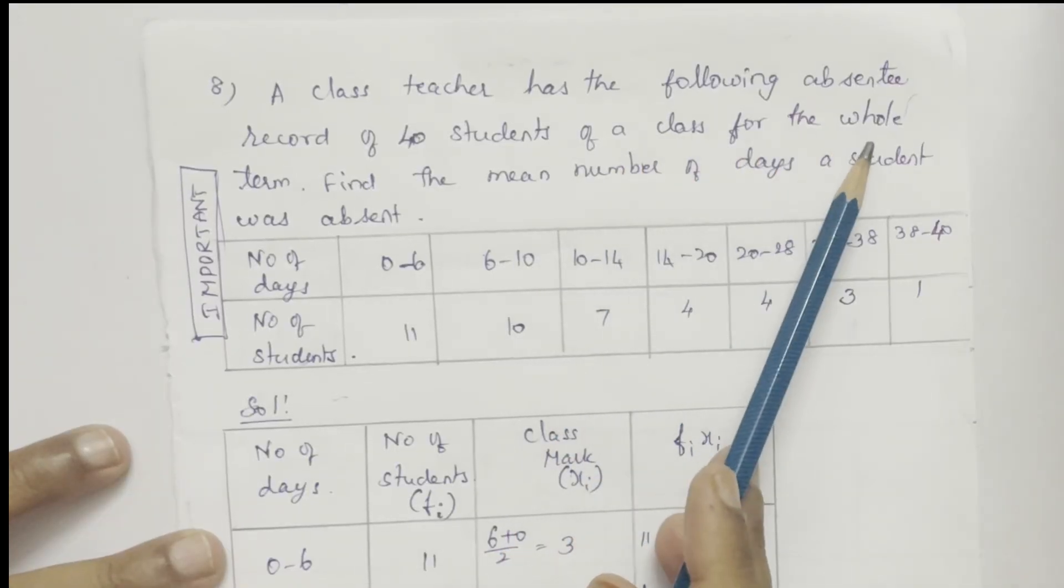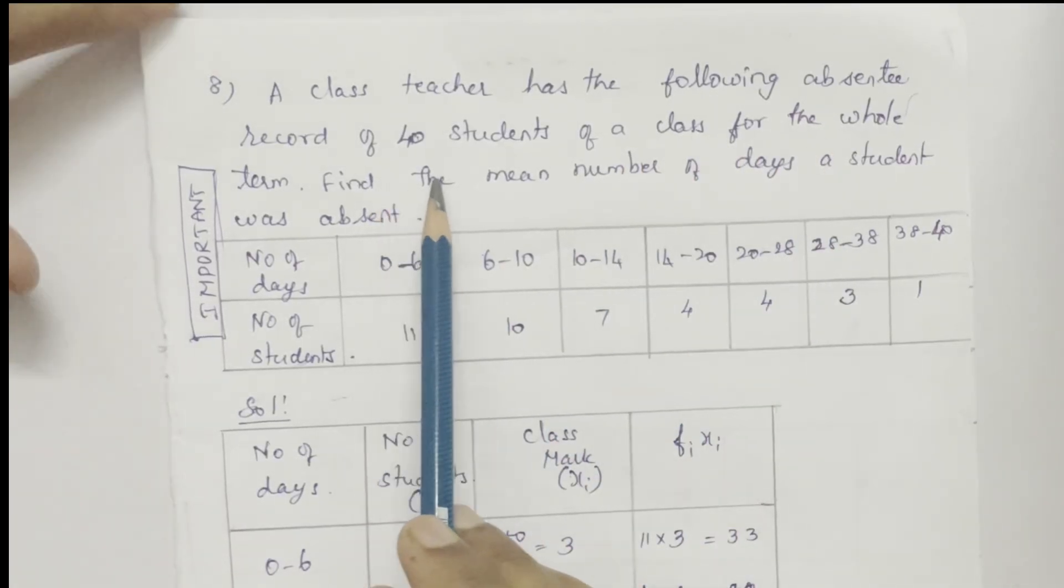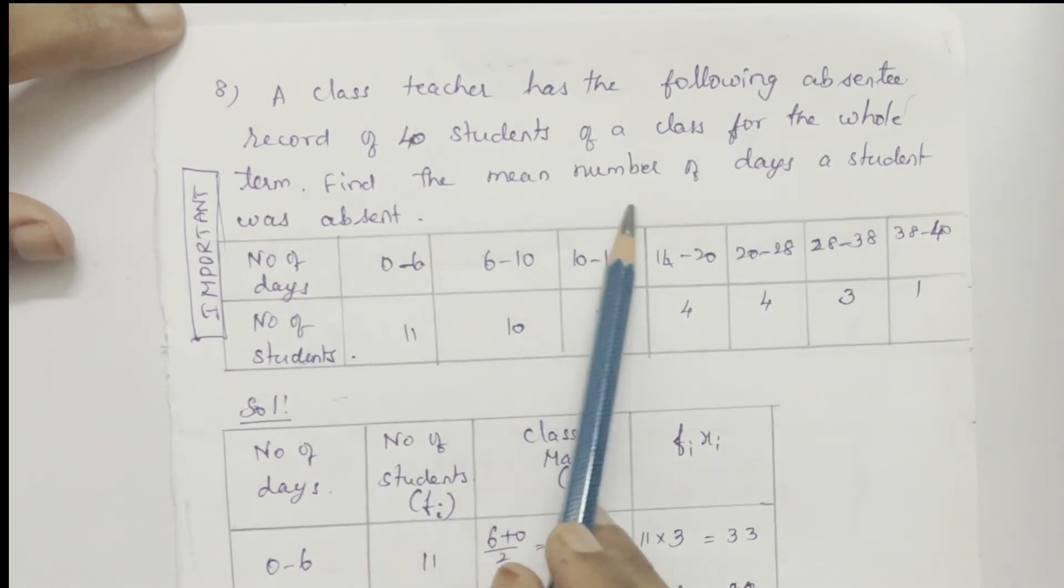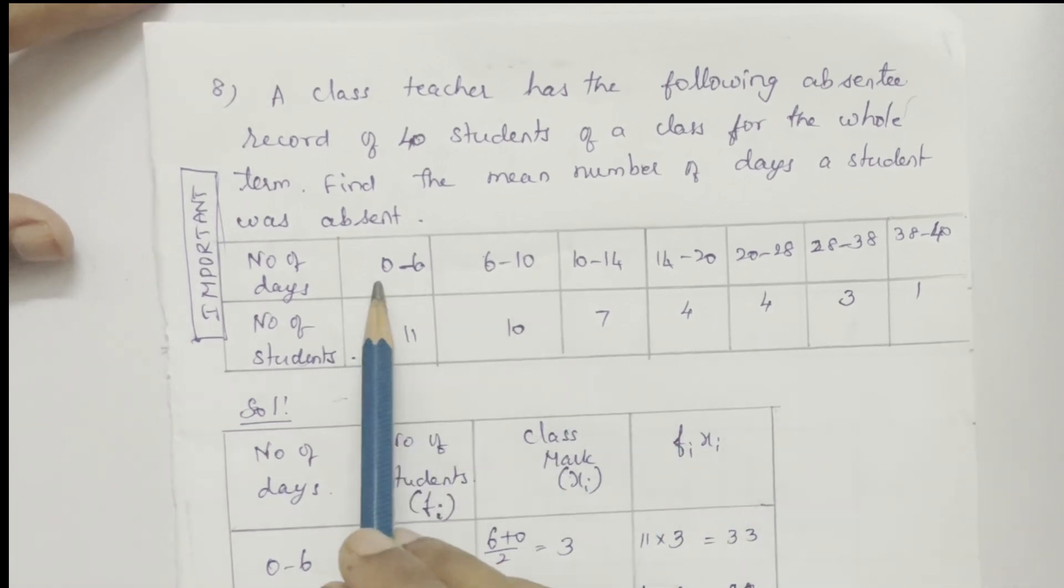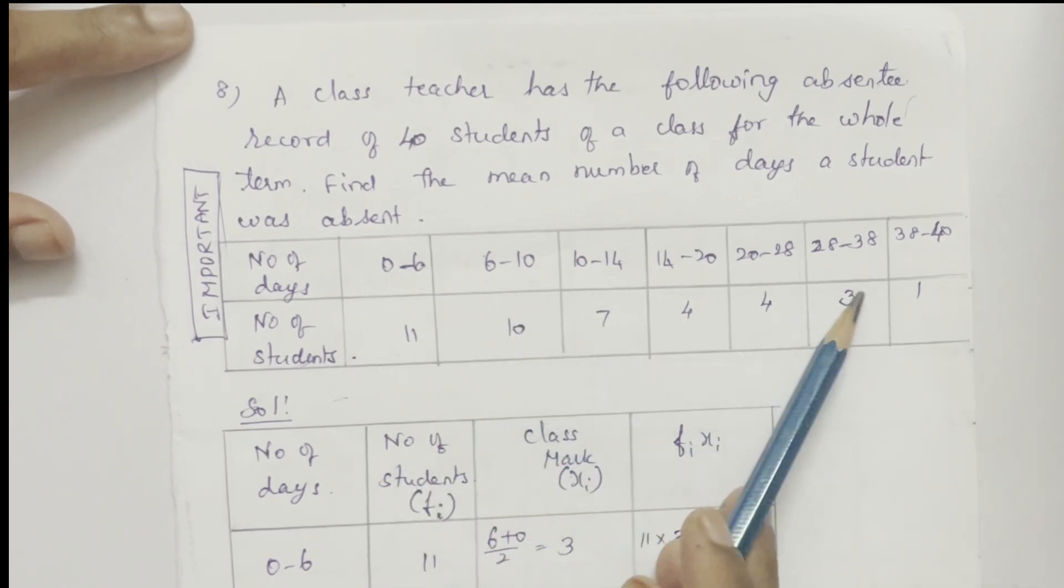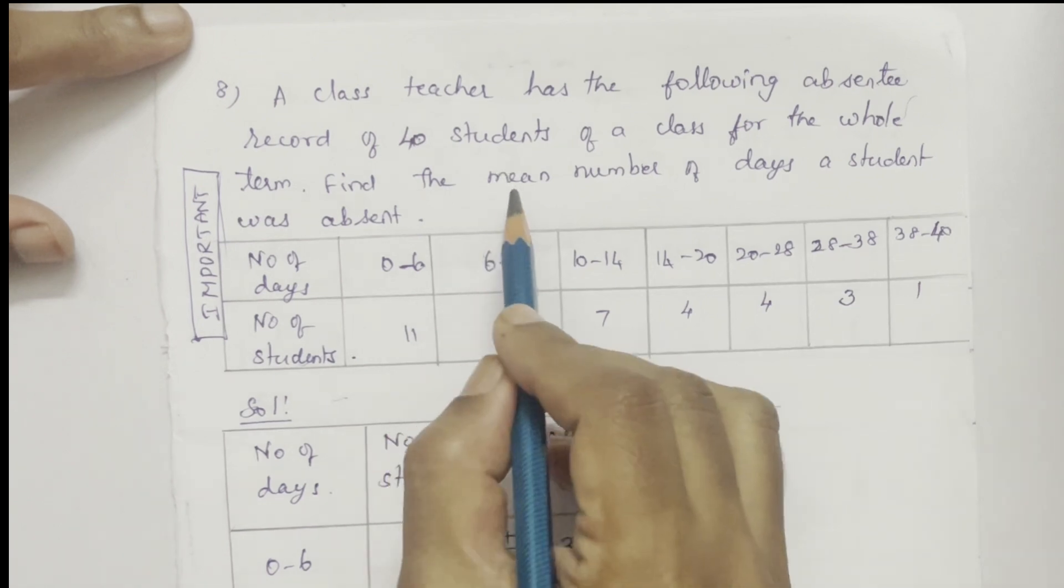A class teacher has the following absentee record of 40 students of a class for the whole term. Find the mean number of days a student was absent. Number of days 0 to 6 days, 11 students are absent. 6 to 10 days, 10 students are absent. In that way it is recorded. We have to find the mean number of days a student was absent.